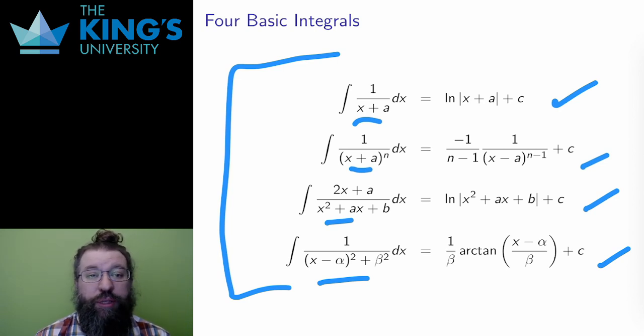These are more general than the previous results. They allow a, b, alpha, and beta to be arbitrary constants, and these four will be the base cases for the rest of the week. I'll spend the rest of my time trying to reduce other more complicated integrals to these specific four special integrals.